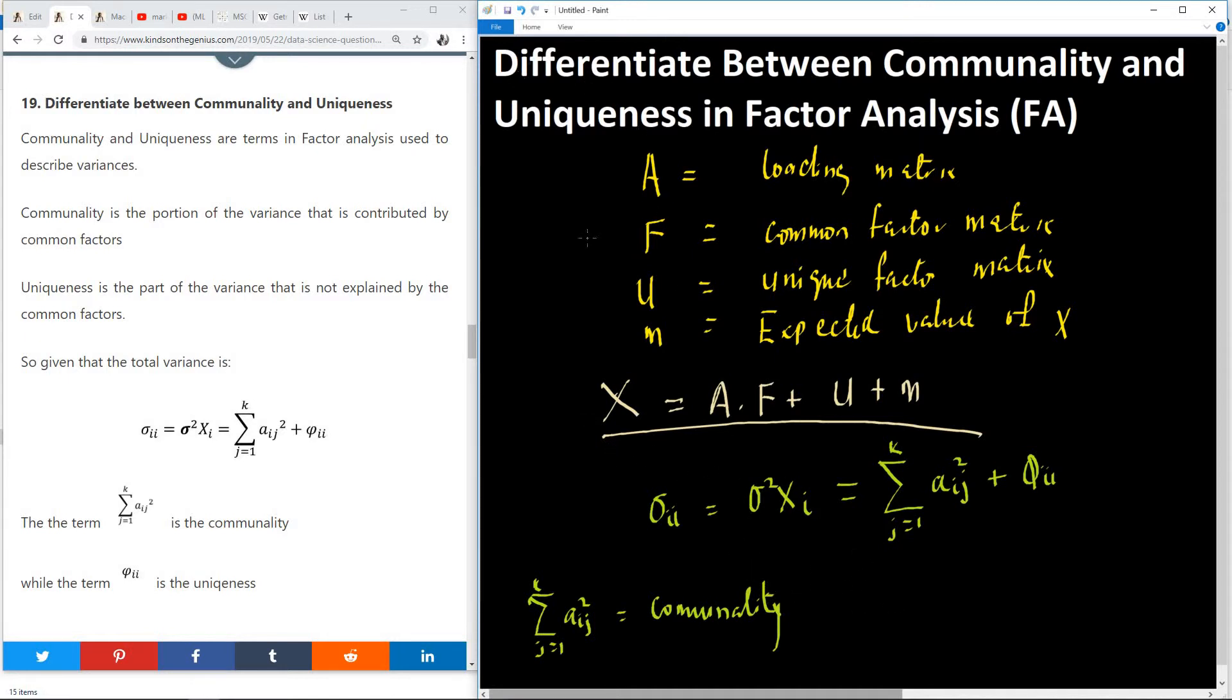And the next one, which is this, so actually this is not theta, it should be phi or something. This is called uniqueness.